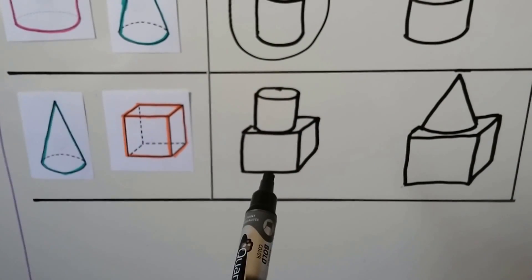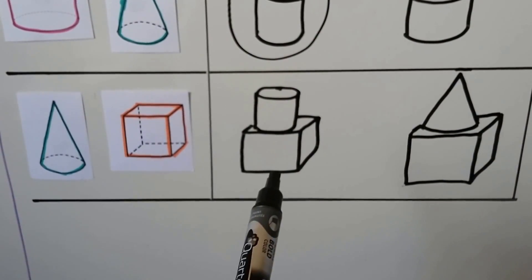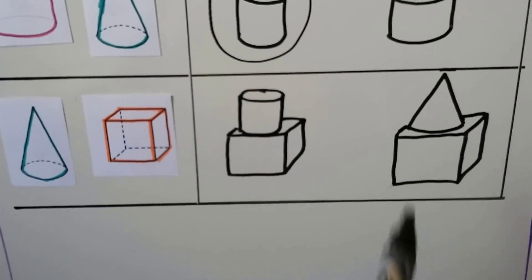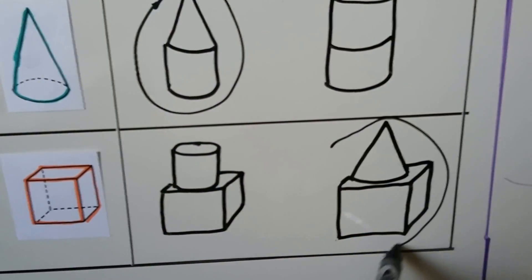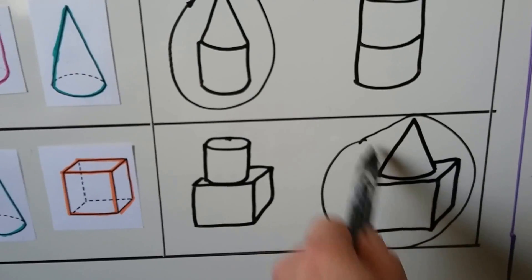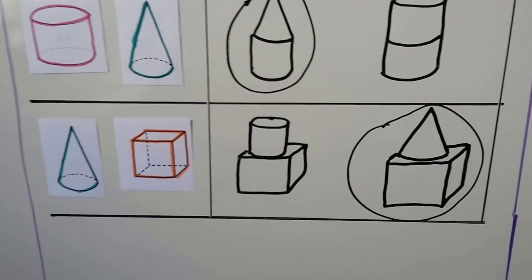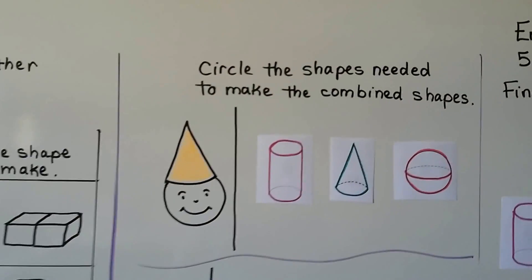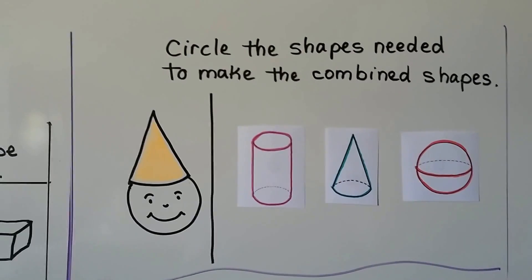What about this one? We have a cone and a cube. This option doesn't have a cone — it has a cylinder and a cube. This one has a cone and a cube, so we could make this one.